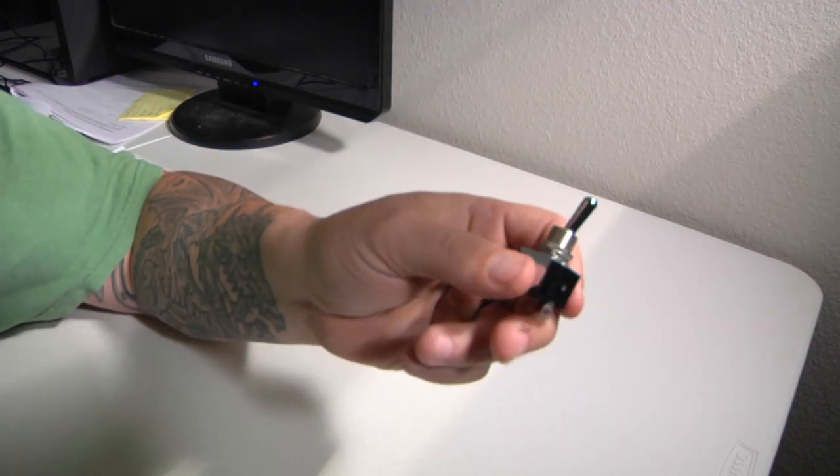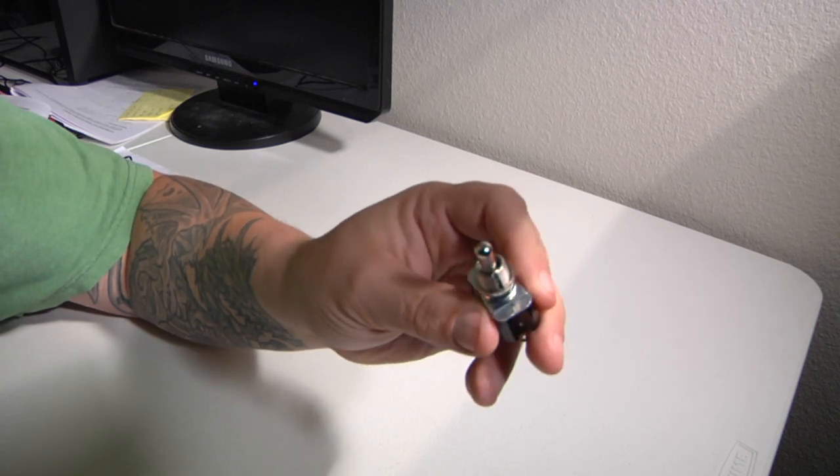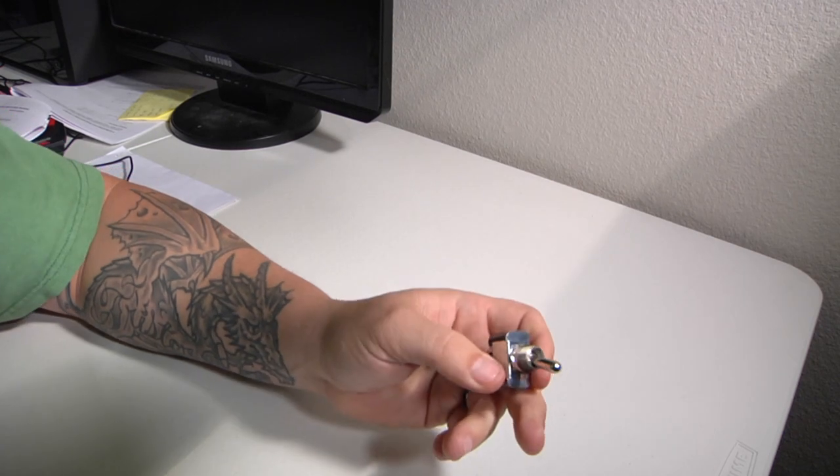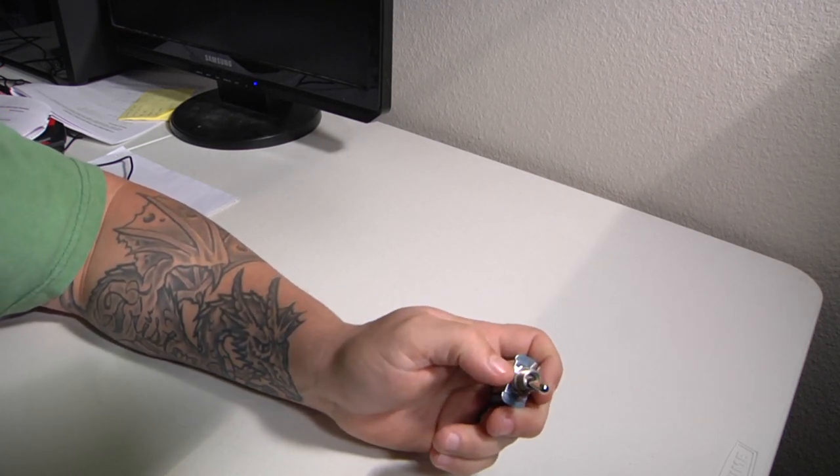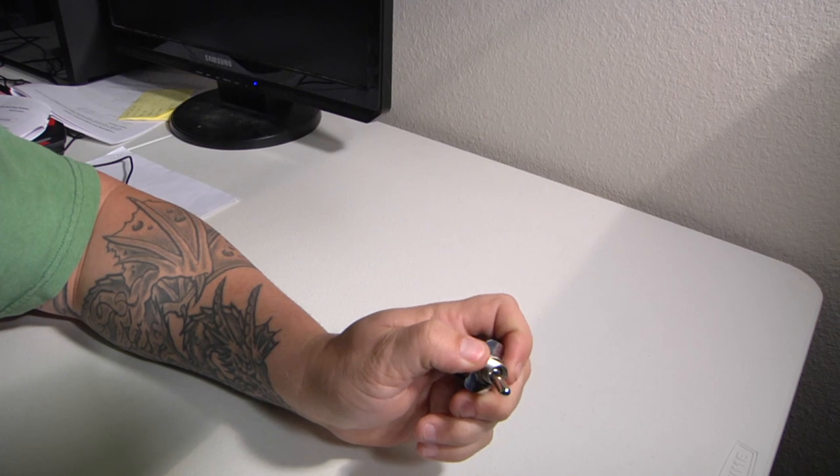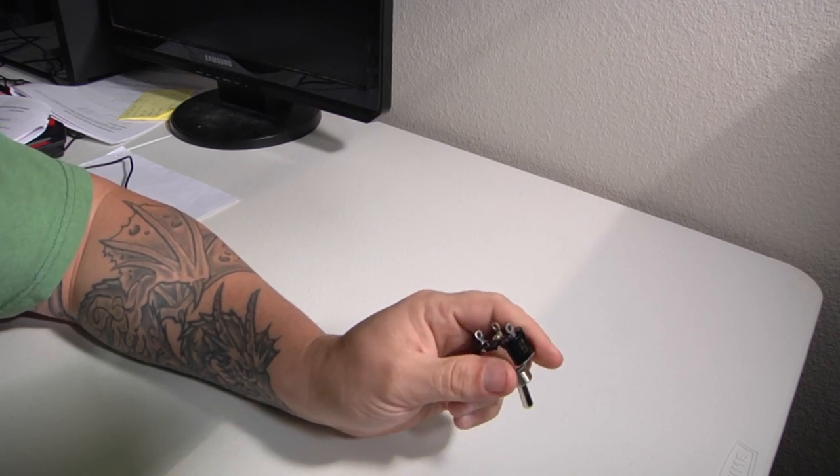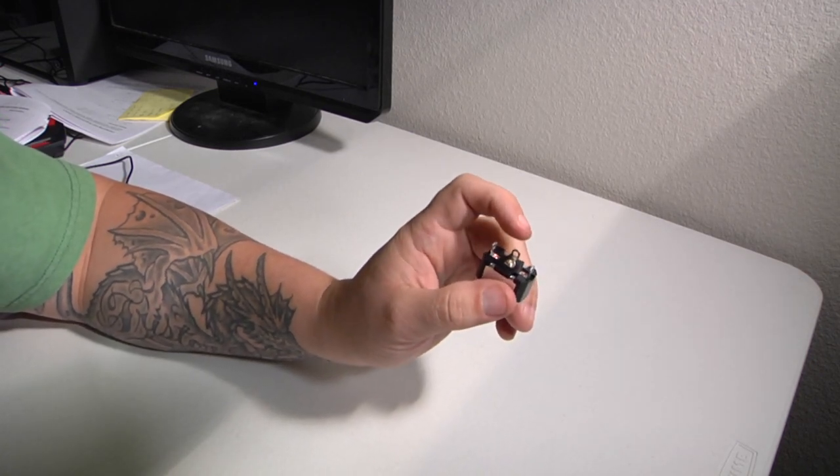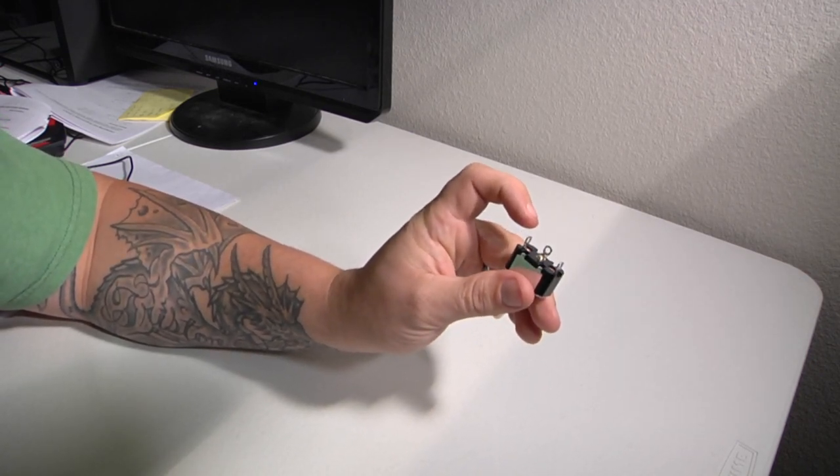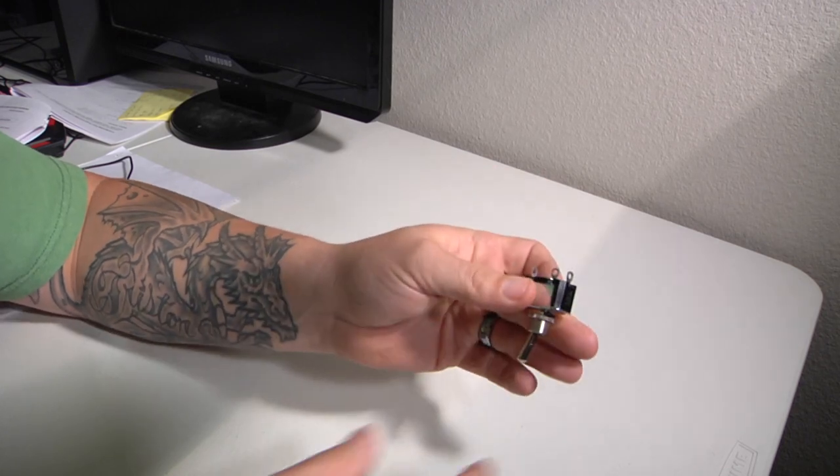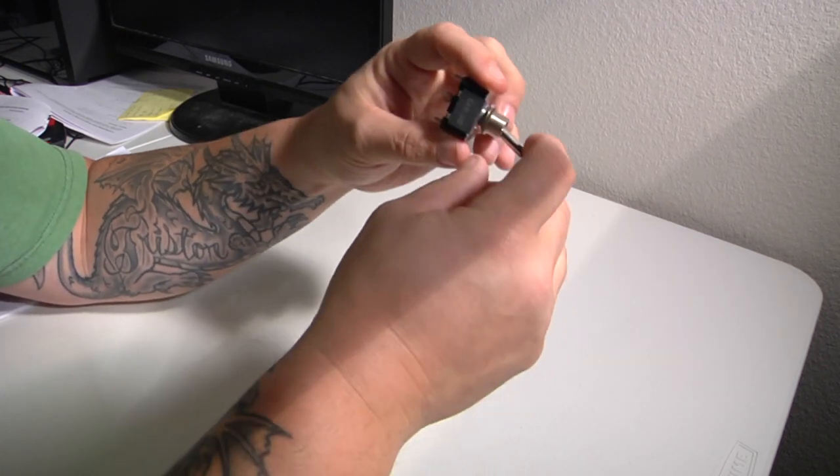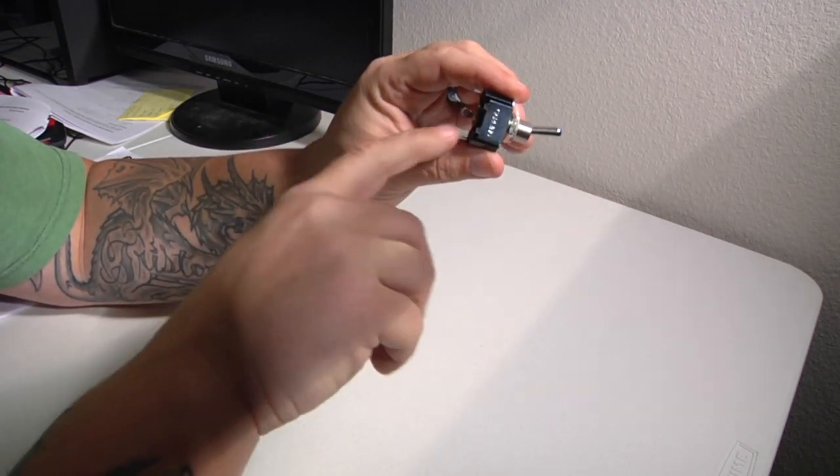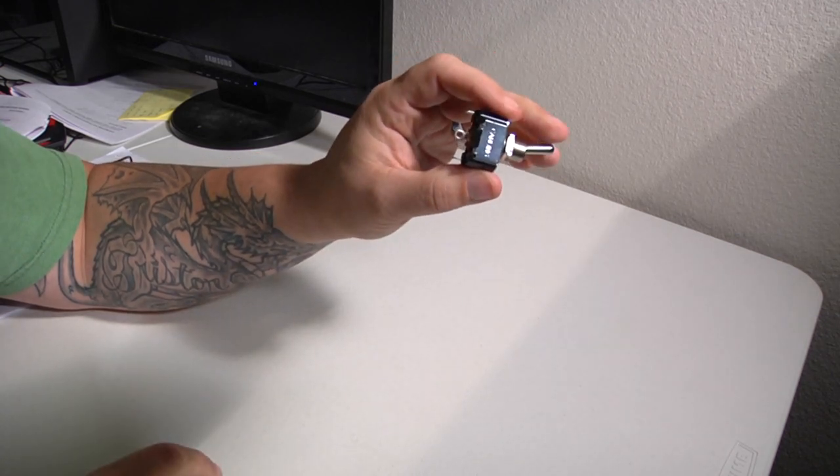The second type of switch we're going to talk about is the toggle switch. You're going to find this in a couple of different varieties in the MIP. You're going to have your two position and then there's two that have three positions. One has a momentary for your fuel reset. How you wire them all is exactly the same. The one in the middle is going to be your common wire or your ground wire, and then you're going to have one on each side for each of your selections. It's going to be opposite of the way the switch is selected. So when you're wiring keep that in mind.